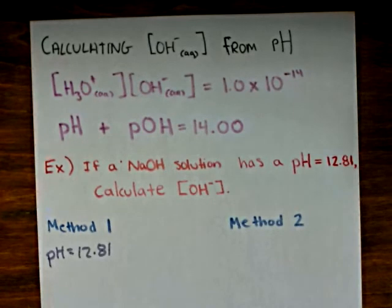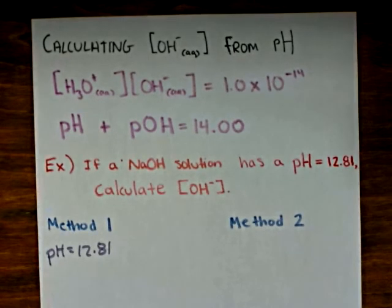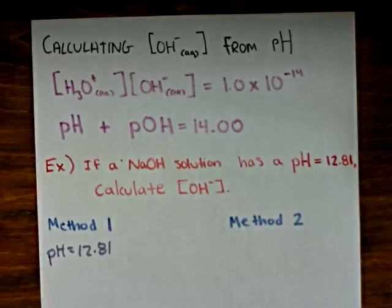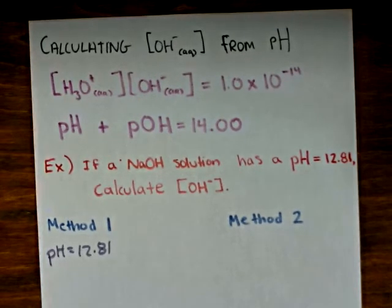If we arrange the second expression, we can solve for the pOH. The pOH will be equal to 14.00 minus the pH.